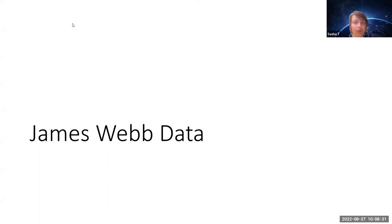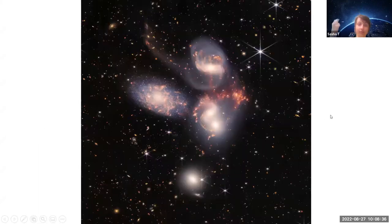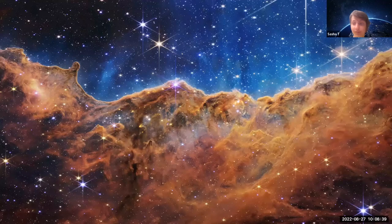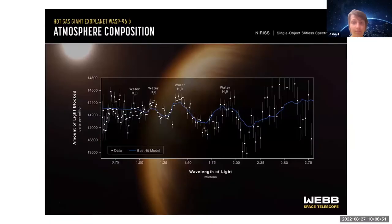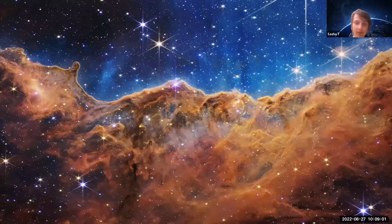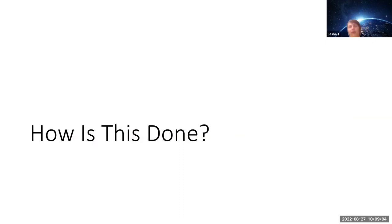Here's some James Webb data — I can gaze at Stefan's Quintet all day. It's important to note that these are actually true color views, so this isn't what you'd see with your eyes looking at the stars. This is some planetary spectra. This was from the first day of data release. This is a large chunk of the presentation — how is all this done?